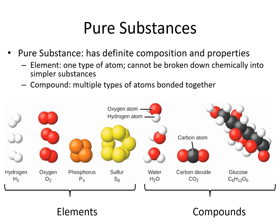Compounds are made from multiple types of atoms. For example, water has hydrogen and oxygen, carbon dioxide has carbon and oxygen, and glucose has carbon, hydrogen, and oxygen. The numbers of atoms in each compound are fixed — water always has one oxygen and two hydrogens. Compounds can be broken down chemically; for example, water can be broken down into oxygen and hydrogen. Elements cannot be broken down chemically.